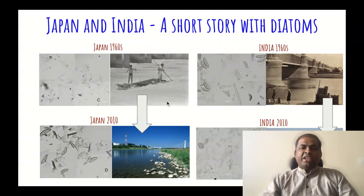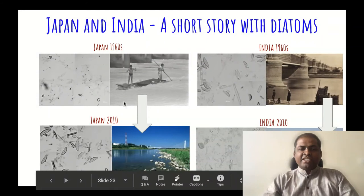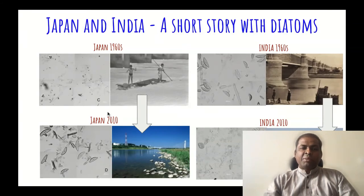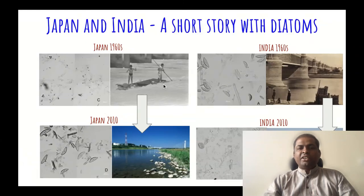In Japan, researchers compared diatoms across different environments. Rivers in Japan that were degraded in 1916 have been restored and look clean today. In contrast, our Indian rivers were clean in the 1960s but are now filled with pollution. This has been revealed through diatom analysis — if we compare our 1960s river diatoms with the clean river diatoms of Japan today, we can see that it is possible to reverse and restore our rivers back to their original condition.